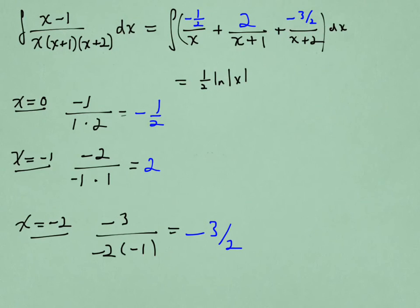We can integrate right away. Minus 1 half log of x, 2 times log of x plus 1, and then minus 3 halves log of x plus 2. And I believe it looks like I've forgotten the minus sign here. That should be minus there.